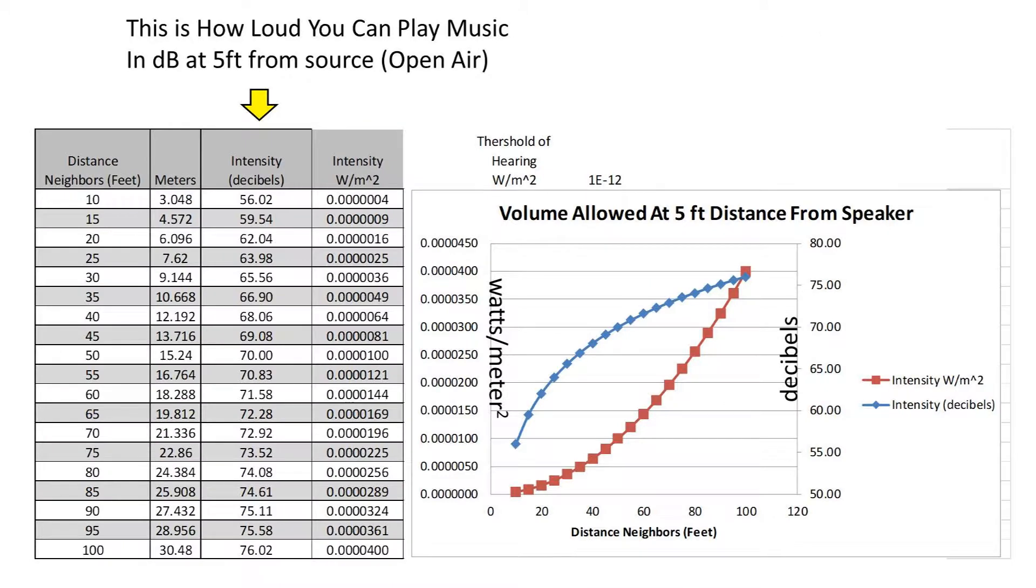For kicks, I decided to graph both the intensity in watts per meter squared, and in decibels, allowed at a distance of 5 feet from the source. You can see that the decibel function is logarithmic, and the watts per meter squared function is in a power format. The two y-axes on this chart go up in a linear fashion.